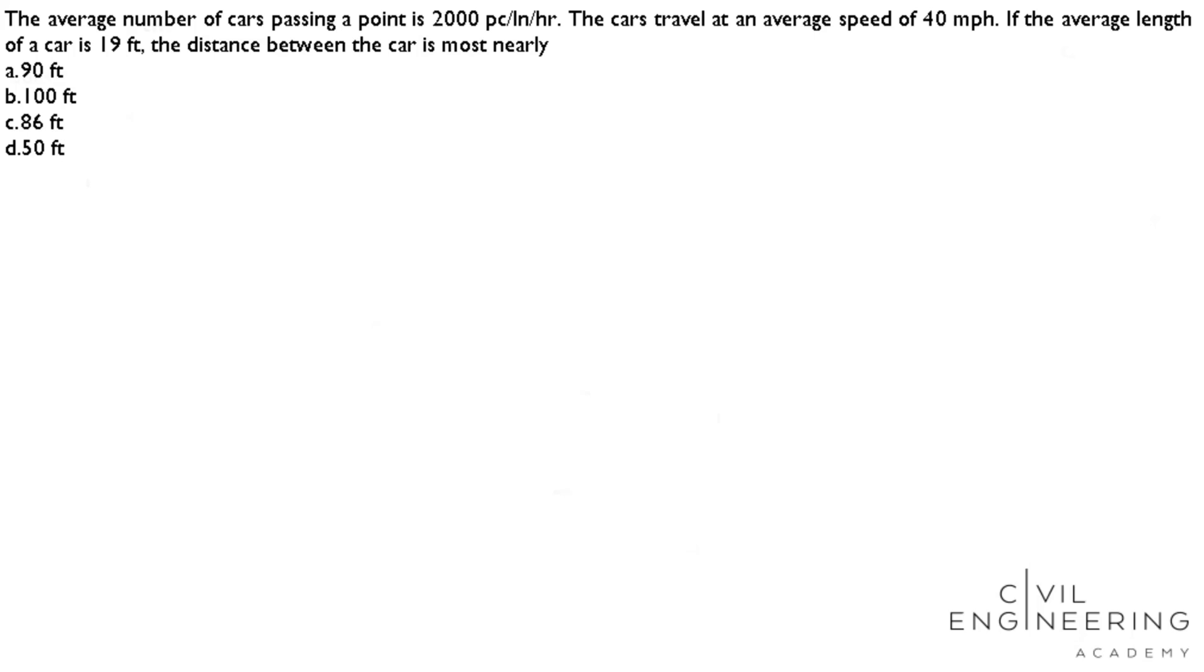The average number of cars passing a point is 2000 passenger cars per lane per hour. The cars travel at an average speed of 40 miles per hour. If the average length of a car is 19 feet, the distance between the cars is most nearly: 90 feet, 100 feet, 86 feet, or 50 feet.